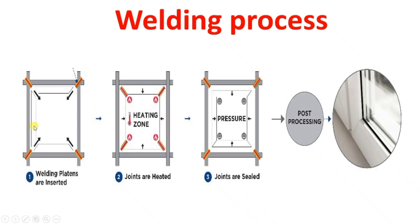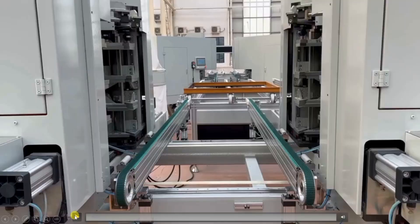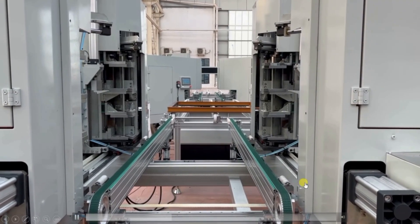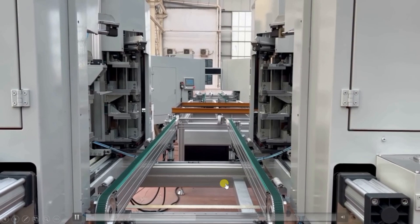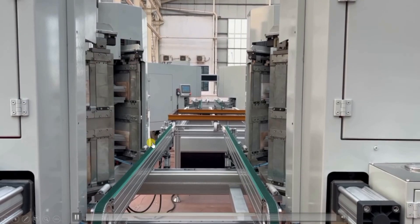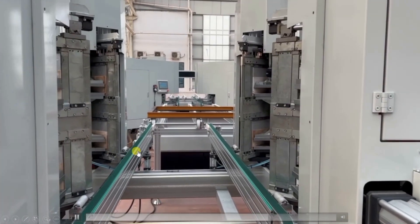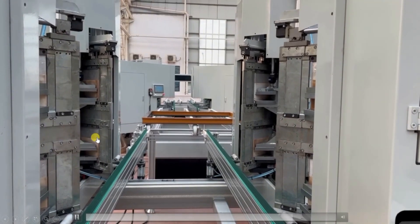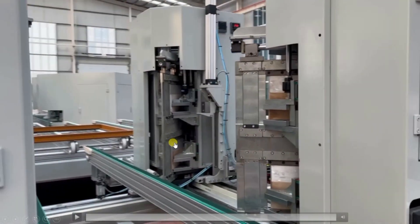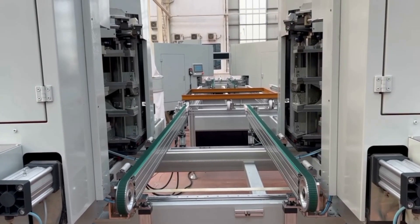After clamping, the heater comes out. First it clamps all four corners or four sides, and then the heater comes out. It halts the frame, then moves slightly backward so the heater can come out. For a certain period, the heater remains in position, then the heaters go back.